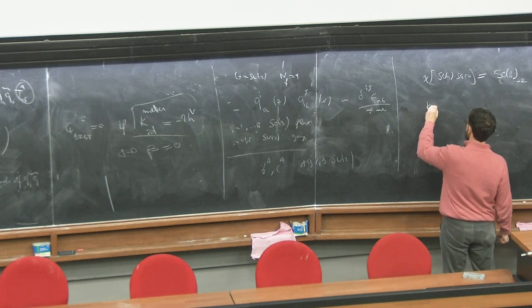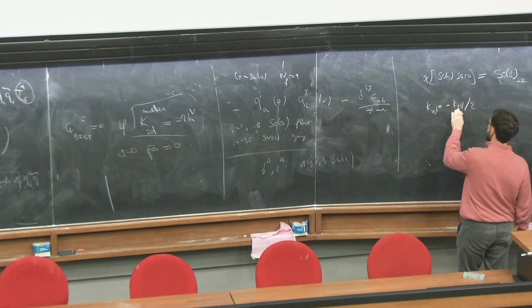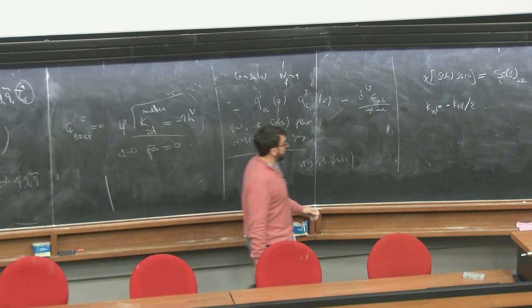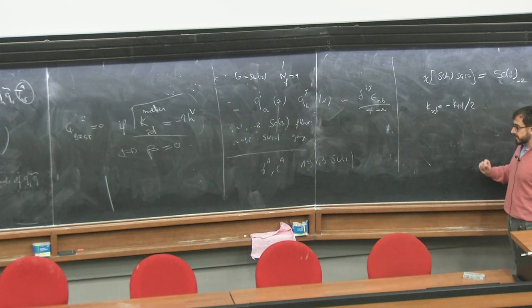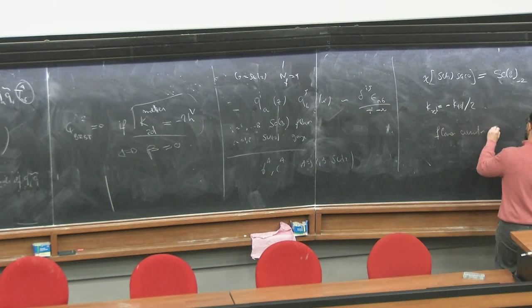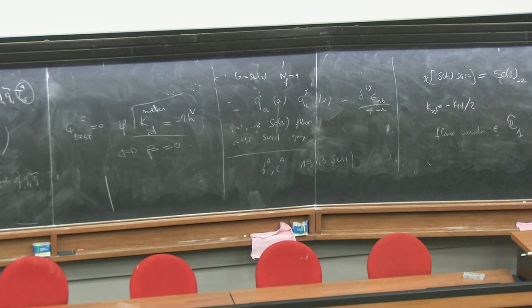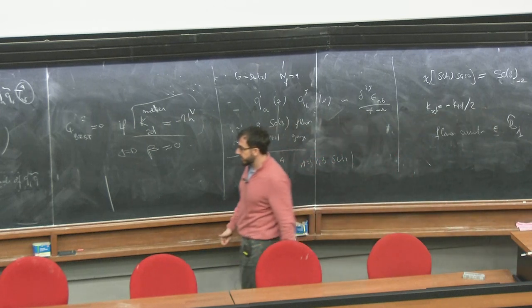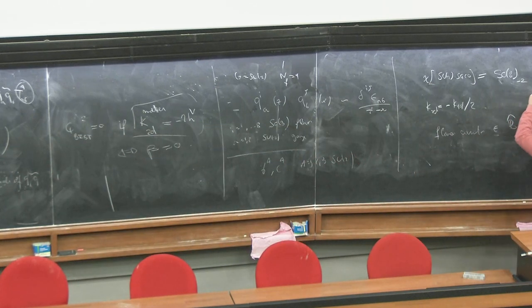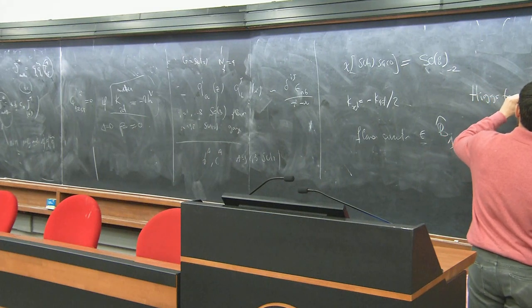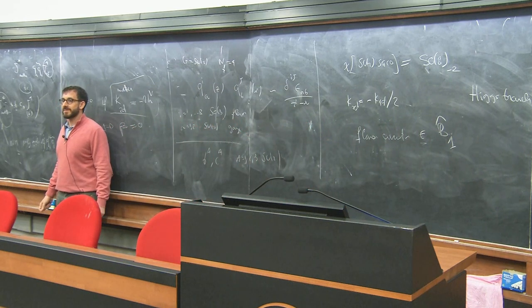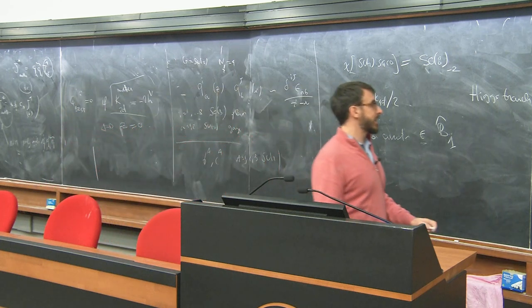The level you could have computed instantly using the formula: we know the level of the four-dimensional flavor current, so we can just compute it. The flavor currents are in the B-hat-1 multiplet. We also have detailed knowledge of the Higgs branch — I left that as an exercise yesterday.